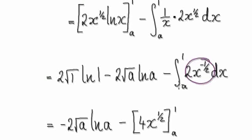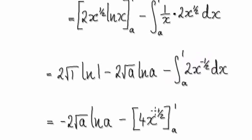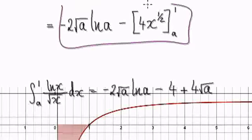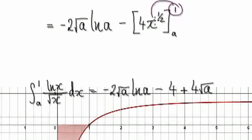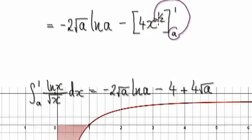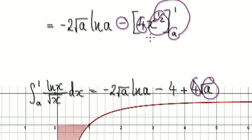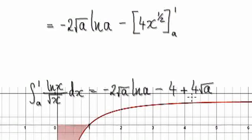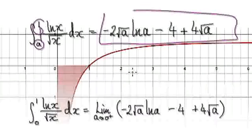Integrate this and it gives you this. Evaluating: putting one in gives square root of one, which is one, times four — that's negative four. Then subtract: putting in `a` gives square root of `a` times four, and with the negatives combining to give a positive. So when you integrate from `a` to one, it gives you this expression here.